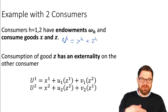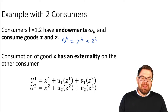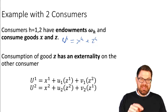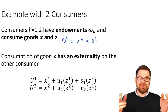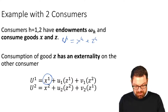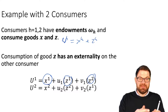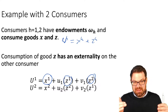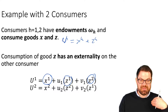At no cost, each person can convert one good into the other. Because good z has an externality on the other consumer, it is part of each consumer's utility function. For person one, utility comes from three things: their own consumption of good x_1, their own consumption of good z_1, and also the other person's consumption of good z — that is z_2. So if z represents cigarettes, person one's utility depends on how many cigarettes person two smokes.